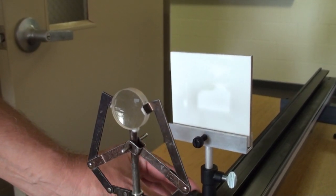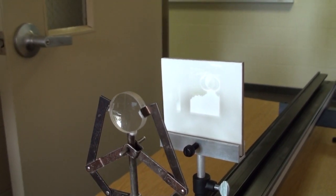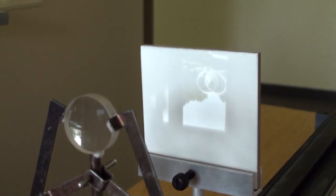Here we adjust the lens screen distance until a sharp inverted image is obtained. We see the DNA statue outside the science complex come into focus.